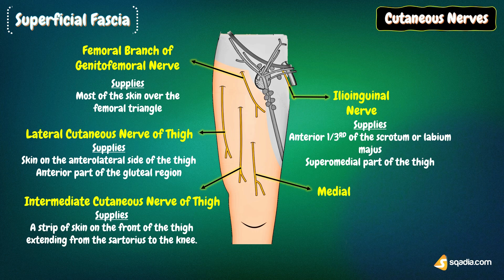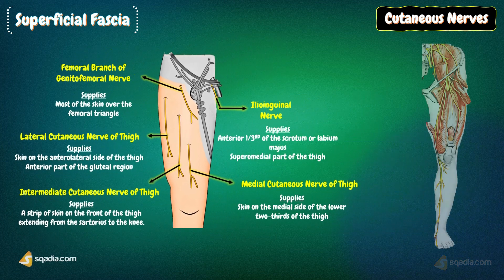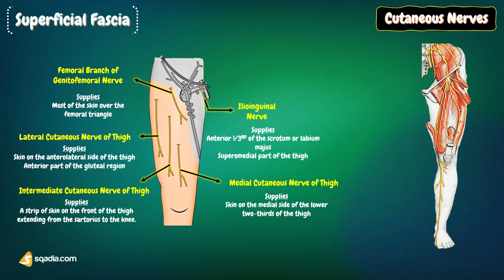The medial cutaneous nerve of the thigh is a branch of the anterior division of the femoral nerve. It divides into anterior and posterior divisions and supplies the skin on the medial side of the lower two-thirds of the thigh. We also have the saphenous nerve, which starts in the thigh and continues its course in the leg.